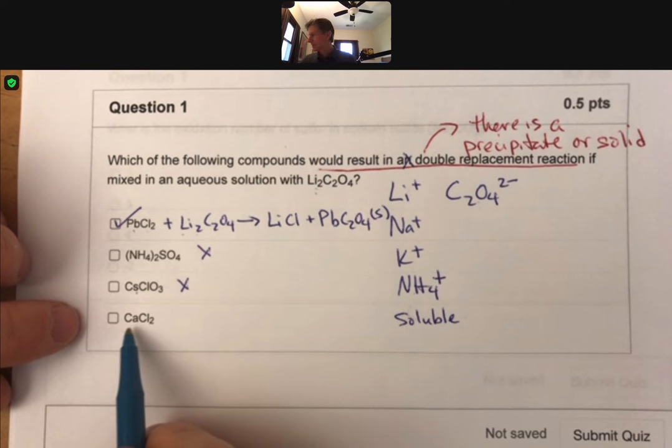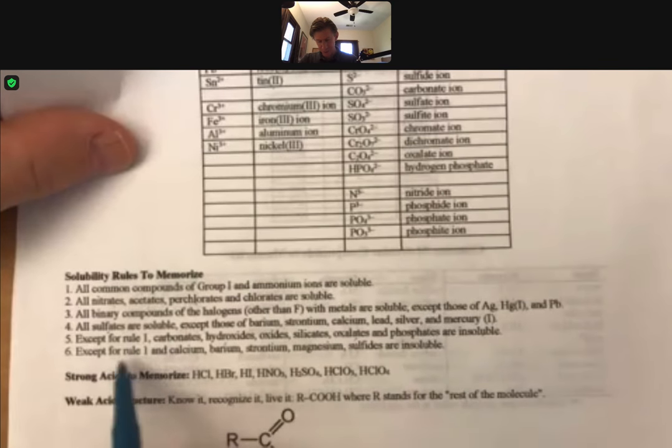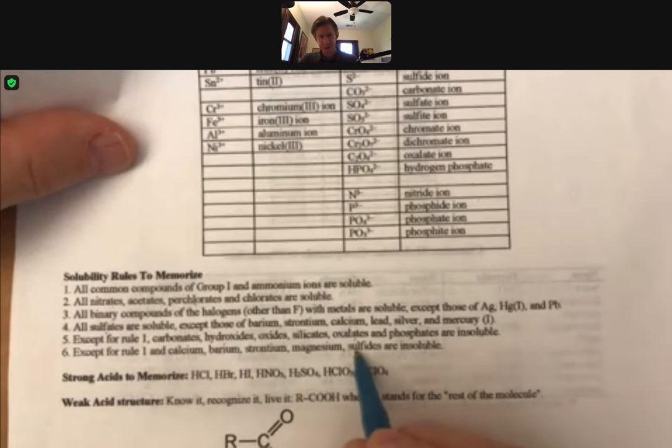So now calcium. Let's see - calcium. I always like to double check my solubility rules. Oxalates, right - there are no exceptions to this except for rule number one. Rule number six has except for rule one, and calcium, but that's only for sulfides.